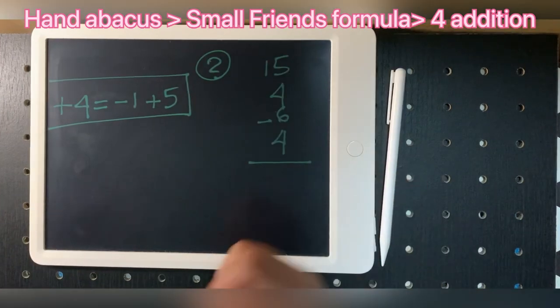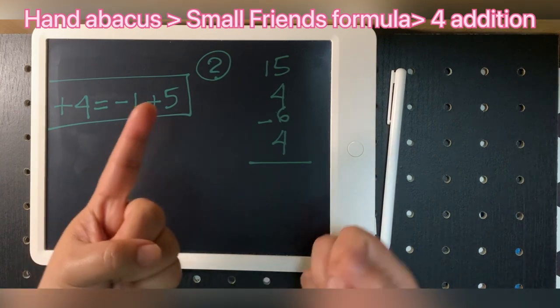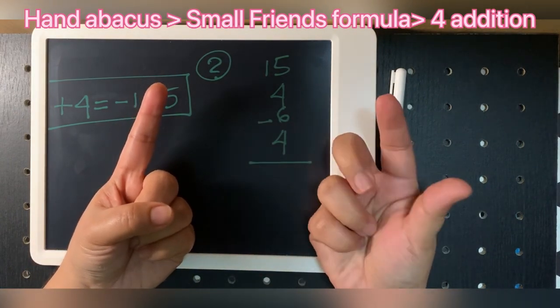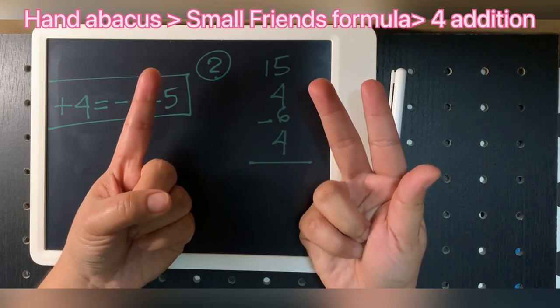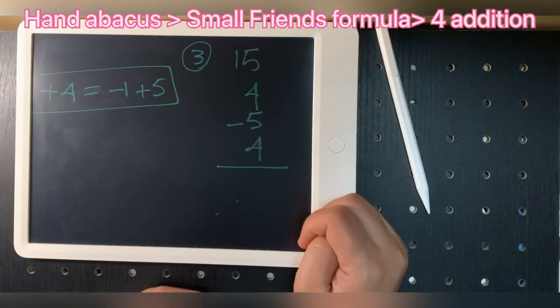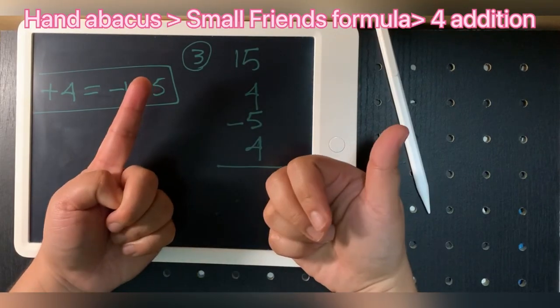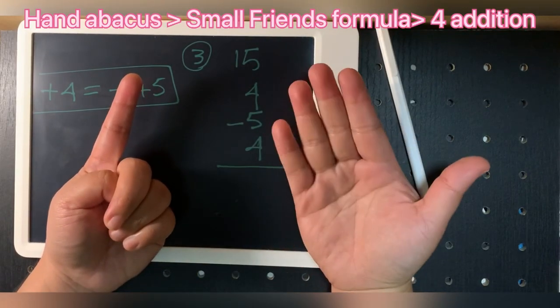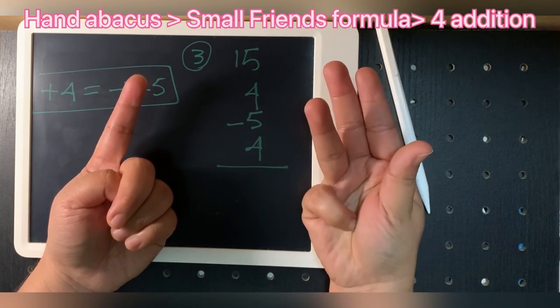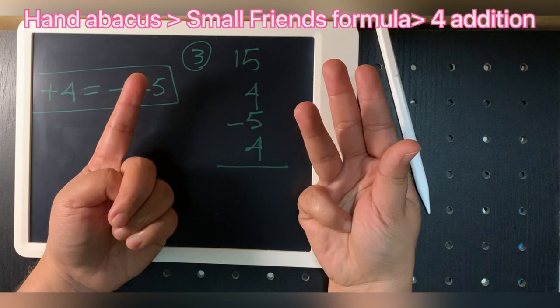Two plus four, plus four, plus four: minus five plus four, plus four. Answer is seven.